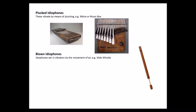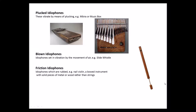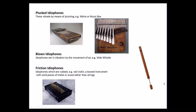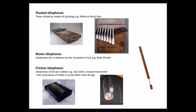Then we have the blown idiophones — idiophones set in vibration by the movement of air, like the slide whistle over here. Then we have friction idiophones — idiophones which are rubbed. For example, the nail violin, which is a bowed instrument with solid pieces of metal or wood rather than strings.